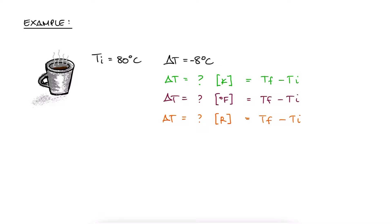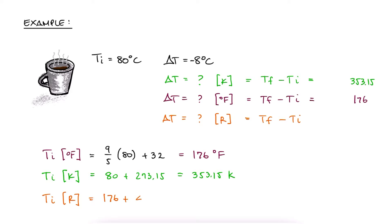Let's find the initial temperature in all three units first. Using the expressions we defined just now, 80 degrees Celsius is equal to 9 fifths times 80 plus 32 or 176 degrees Fahrenheit. 80 degrees Celsius is also equal to 80 plus 273.15 or 353.15 Kelvin. And 176 degrees Fahrenheit is equal to 176 plus 459.67 or 635.67 Rankine.